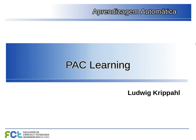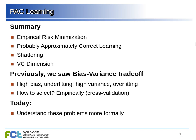Today we're going to look at the idea of probably approximately correct learning, which can give us a more solid theoretical grounding on most of the things we've been seeing so far. Previously we saw this idea of under-fitting and over-fitting, and in practice we estimate this by something like cross-validation or training and validation sets, measuring the error inside and outside the training set.